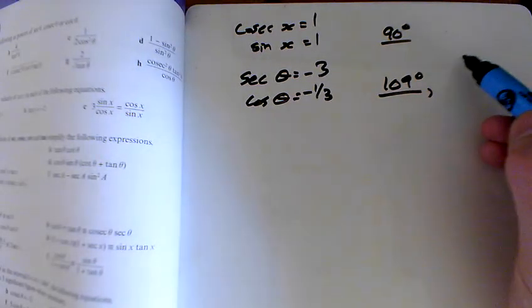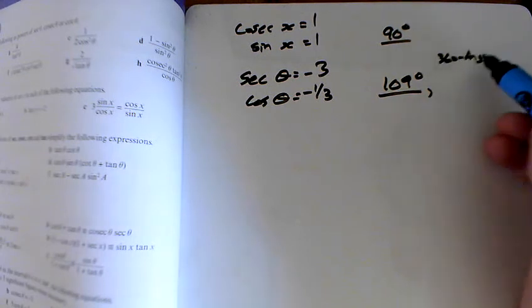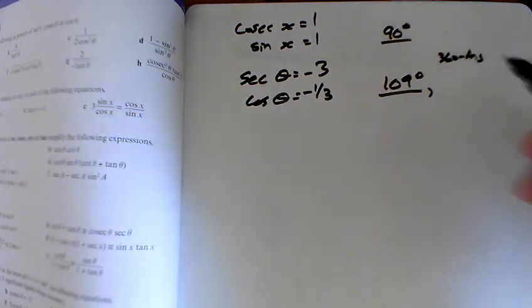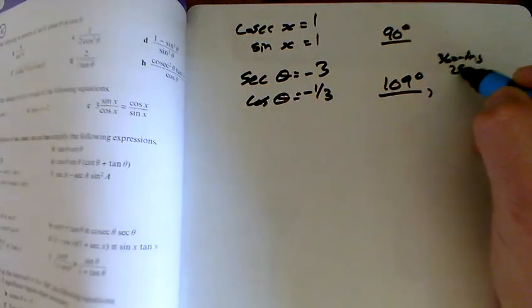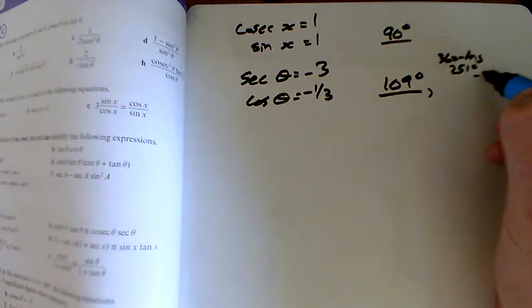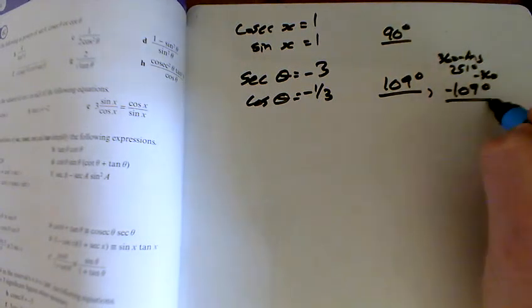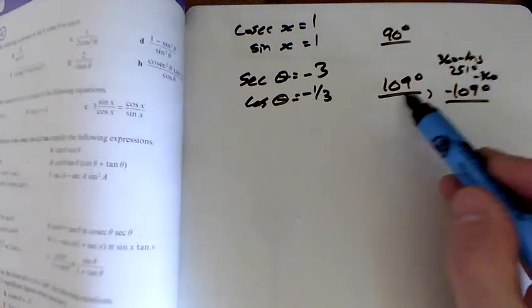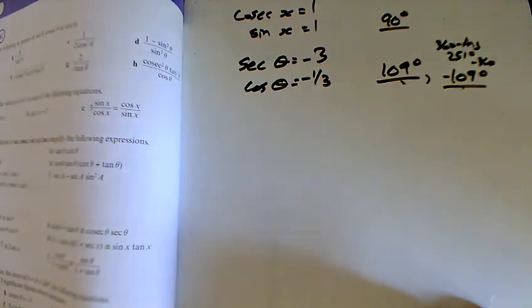360 minus it won't be, but 360 minus the answer would give you 251, and as that's too big, take 360 from it and you get minus 109. And remember, for a cos, you do get symmetrical answers there about the y-axis.